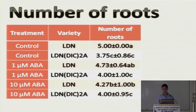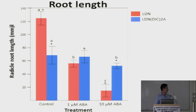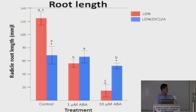Statistical analysis confirmed that in Langdon, the difference with ABA application was quite significant, while in the substitution line it was not significant. For root length, there was a dramatic reduction in the substitution line, while in Langdon the reduction was less. But the reduction in the substitution line was not as pronounced as in the commercial variety, suggesting Langdon is more sensitive to ABA than the substitution line.